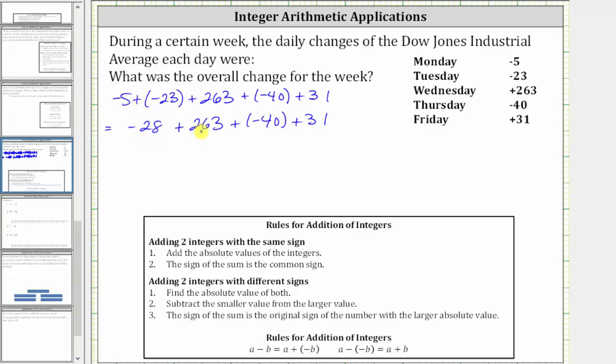Next, we have negative 28 plus 263, which indicates a loss of 28 and then a gain of 263. Notice the gain of 263 is going to outweigh the loss, and therefore the sum is going to be positive. However, we are adding integers with different signs. When adding integers with different signs, we find the absolute value of both, and then we subtract the smaller value from the larger value, and the sign of the sum is the sign of the number with the larger absolute value.